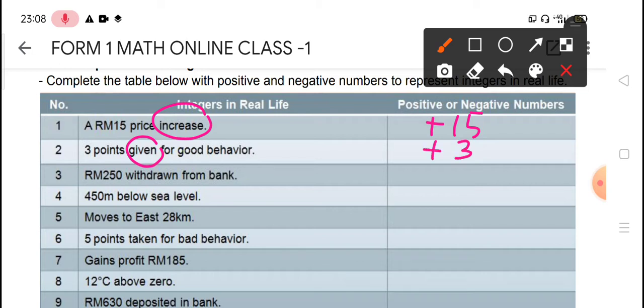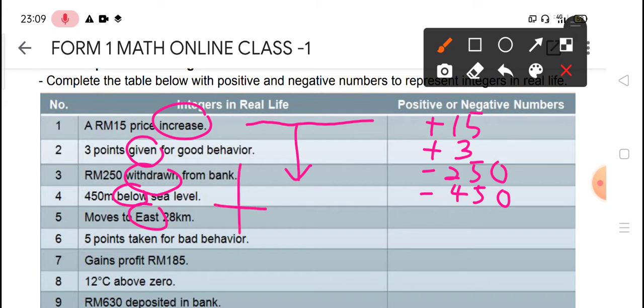Number three, RM250 withdrawn. Withdrawn means you take out from bank, so the money from your bank getting lesser. So this one is negative 250. Number four, 450 meter below sea level. Below sea level means below is down here, so below will be negative 450. Next, move to the east 28 km. According to the geography, east means move to the right. Move to the right means positive, so this one will be positive 28.